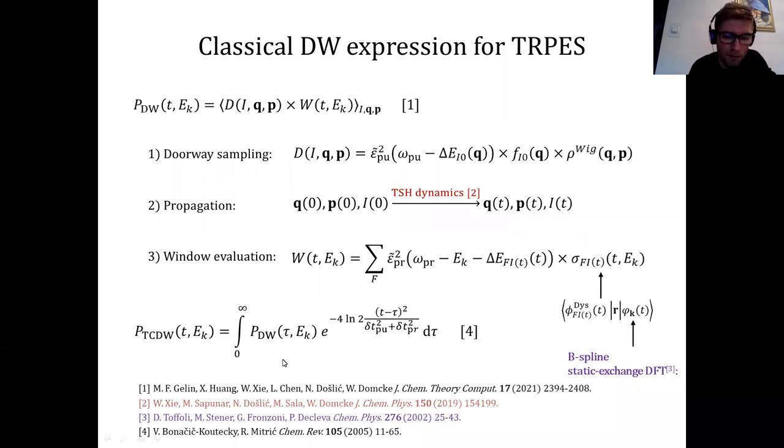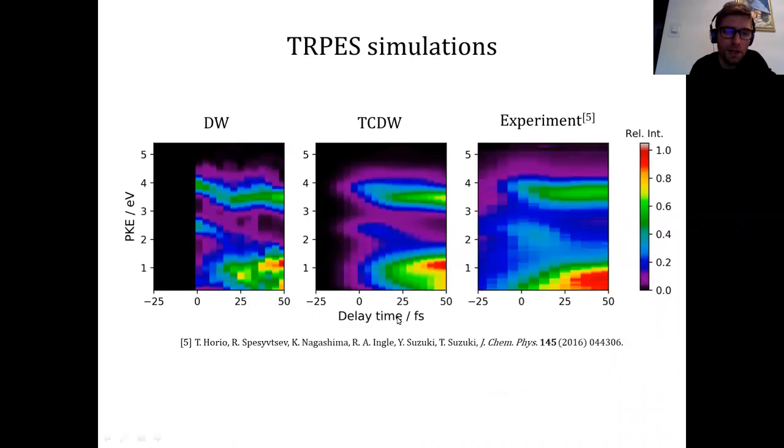Okay, so now we have everything, and we just need to evaluate all of these expressions. And for the pyrazine case, it looks like this. So this is the experimental TRPES of pyrazine, as I said, recorded by Professor Suzuki. And these are our two simulations. So we have pure doorway window simulation, in which, as you can see, we don't get any signal for negative delay time, because we don't have temporal shapes of our pump and probe pulses included. And this is temporal convolution doorway window simulation. As you can see, now we have some non-zero intensity for negative delay times, the same as in the experiment. Okay, so all in all, as you can see, the agreement is, I would say, pretty good.